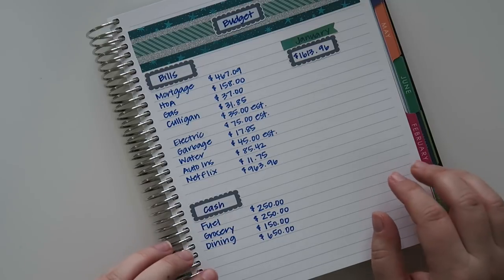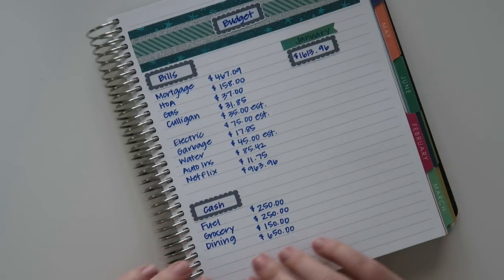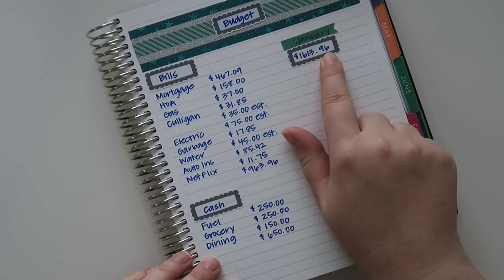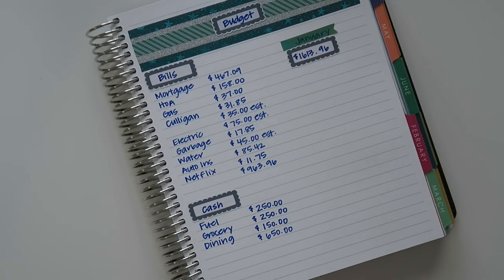And then my total for this is $650 for my kind of cash categories as I like to call it. I don't really have any other extra pending expenses that are coming up in the month of January that I know of yet. So I'm just gonna leave it like this. So my total for January as of right now as we sit is $1613.96.